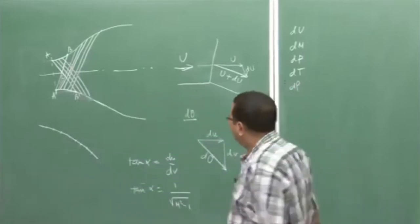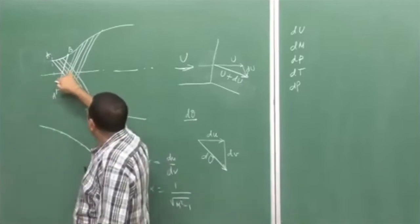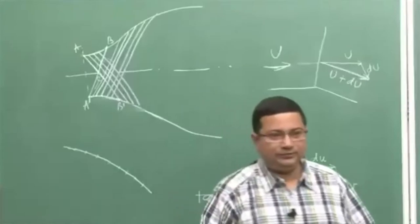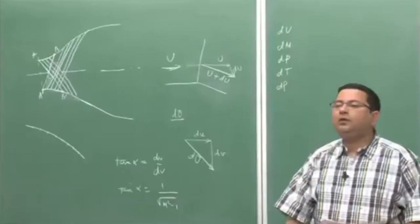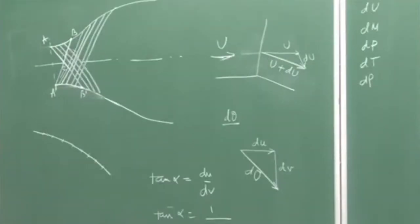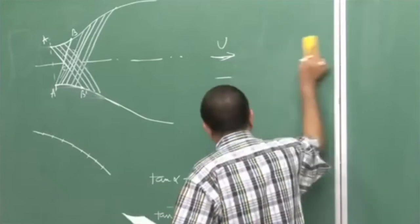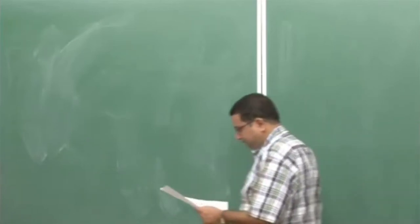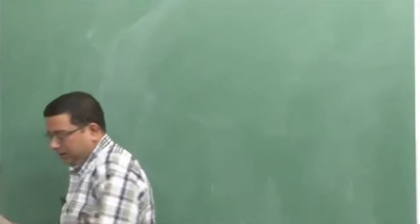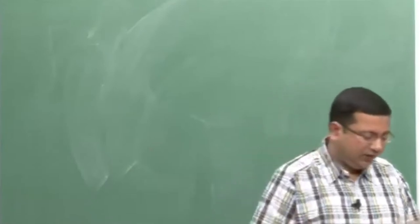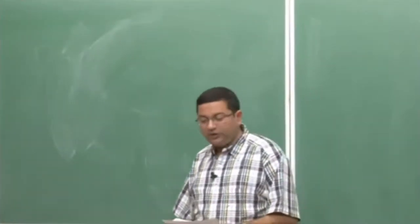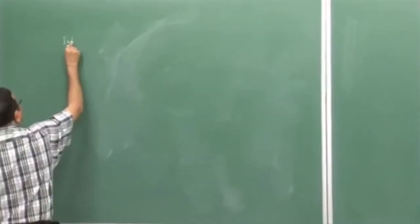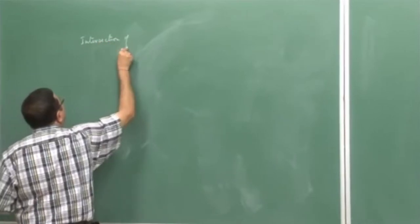Everywhere there is a change in properties like this — the properties are going to change with different equations or expressions. So now what we want to do is discuss what happens when the Mach lines intersect each other. This was the recapitulation of the previous class. Let me focus on the intersection of Mach lines and how the properties change. The region downstream of what we have been discussing so far — the Mach lines cross each other. So conditions downstream of these Mach lines are no longer uniform, which were uniform previously.